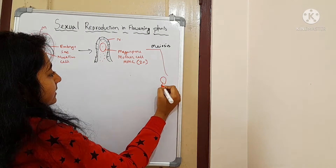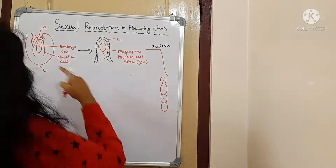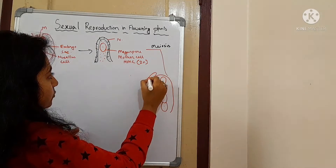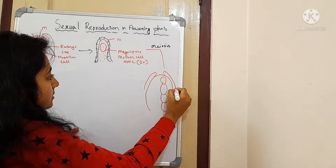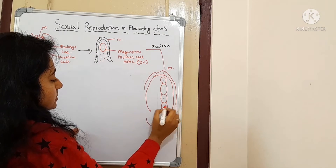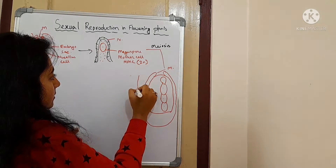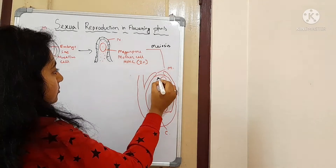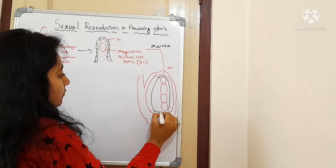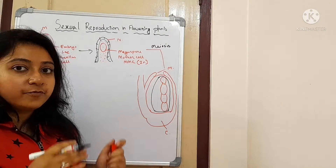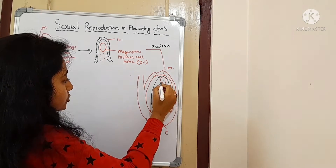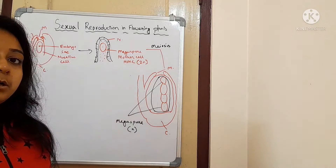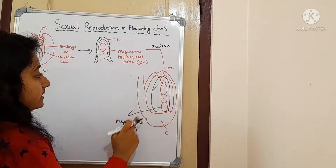Inside this structure — where the integuments are on the sides, the micropylar end is at one end, and the chalazal end is at the other — there are nucellus cells in the outer region. Out of these four megaspores produced, all four are considered megaspores and all of them have half the number of chromosomes of their parent cell. So from one megaspore mother cell, four megaspores are produced.